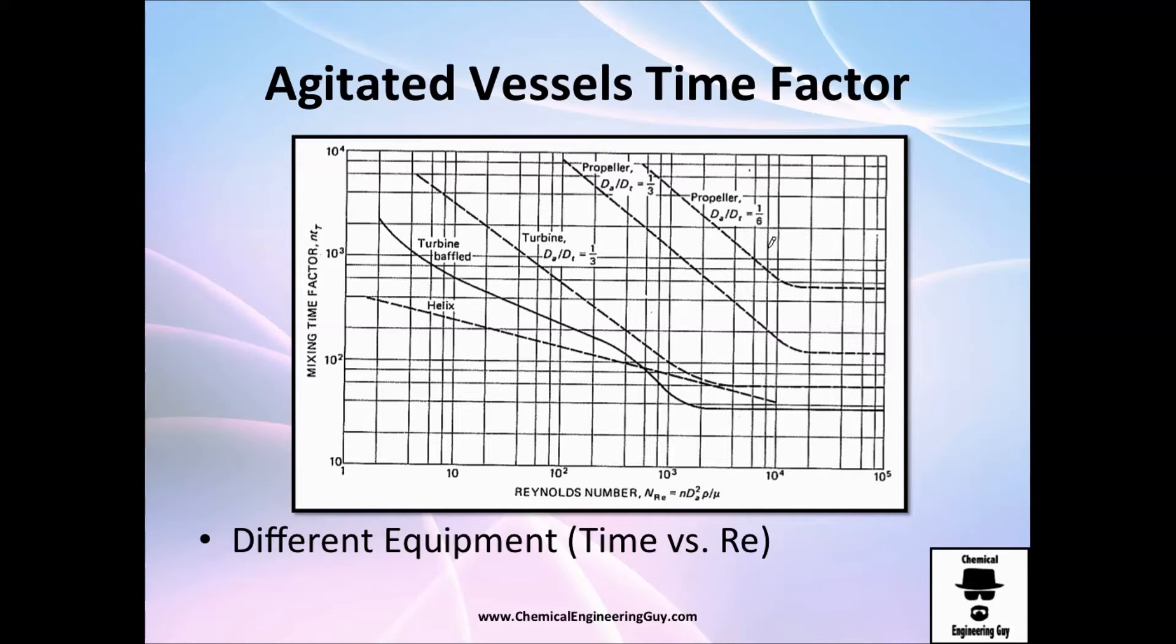And why is this? Once again, I wanted to show you this graph. Once you have turbulence, you have constant factor, so the Froude number is no longer a factor.